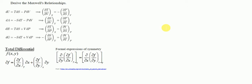To derive this relationship, the first thing we want to do is look at this equation. We know that du = TdS - PdV, which means that u is dependent on S and V. So u is a function of entropy and volume.